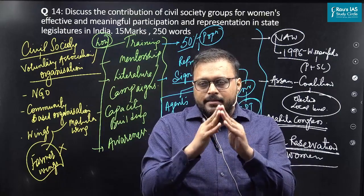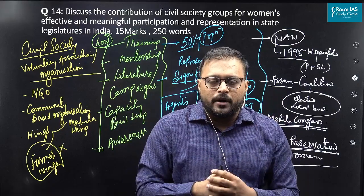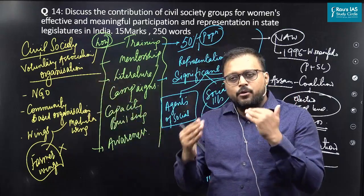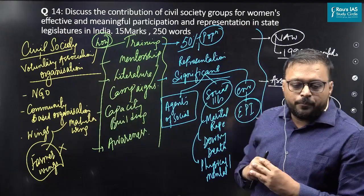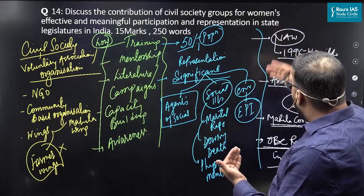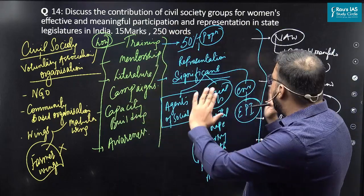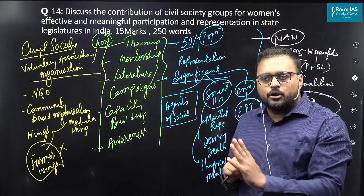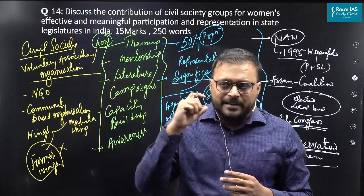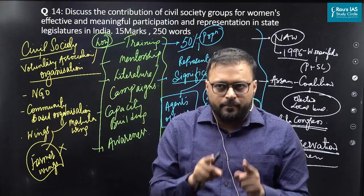You can think about this question on four different lines and accumulate all the points together to write as per the demand of the question. Introduce the topic, then state the contribution of civil society groups — one, two, three — substantiated with different examples of civil society groups. I hope you have understood the demand of the question and how to tackle it. Don't panic with this question; whatever knowledge you have, use that at the time of examination. Thanks a lot.